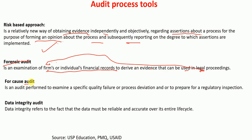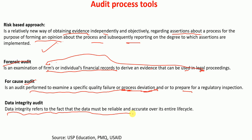For-cause audit is an audit performed to examine a specific quality failure or a process deviation and to prepare for a regulatory inspection. Data integrity audit relates to the fact that data must be reliable and accurate over its entire life cycle.